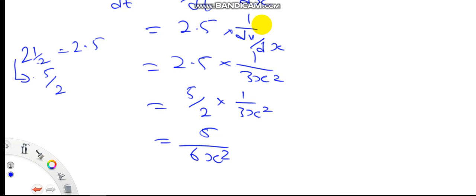Hi, my name is al-usain bari, welcome to this second part of this second example on applying the idea of rates of change. We have found dx/dt to be 5 over 6x squared.